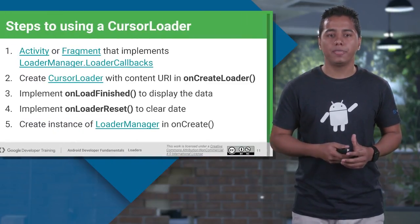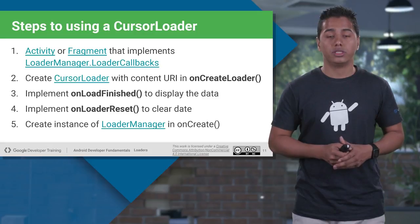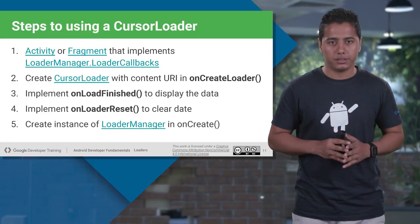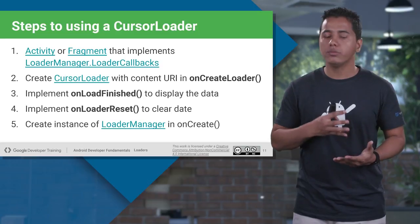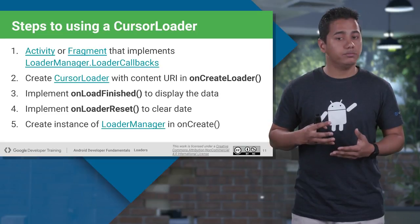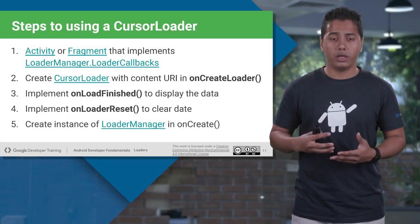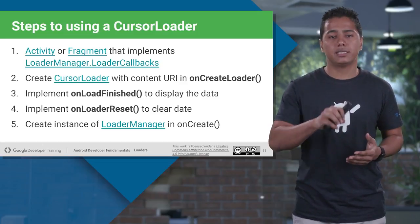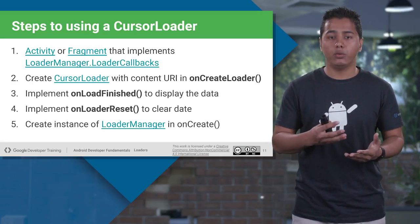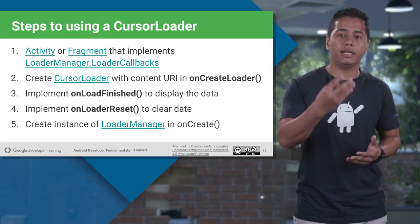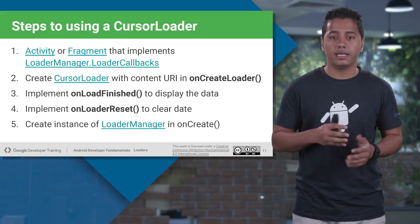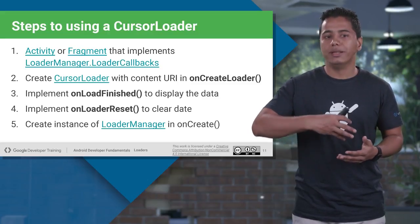Let's see how exactly we can implement this. The steps for using cursor loader: first, create an activity or fragment inside which you implement the loader callback methods — onCreateLoader, onLoadFinished, and onLoaderReset. In onCreateLoader, you initialize the cursor loader object and provide the content URI to access the content provider. In onLoadFinished, you get the data and display it once the loader is finished. In onLoaderReset, you clear whatever the loader was doing before and reset it.